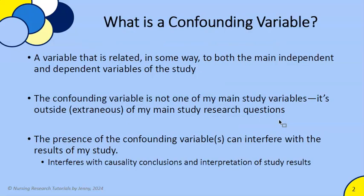Confounding variables are things that researchers have to deal with on a regular basis. We need to understand them as consumers of research — those reading research studies and incorporating them into nursing practice — and also if you're designing a study. A confounding variable is a variable related in some way to your study's key independent and dependent variables. For example, in a randomized controlled trial, the independent variable could be an intervention you are manipulating, where one group gets an educational intervention and the control group does not.